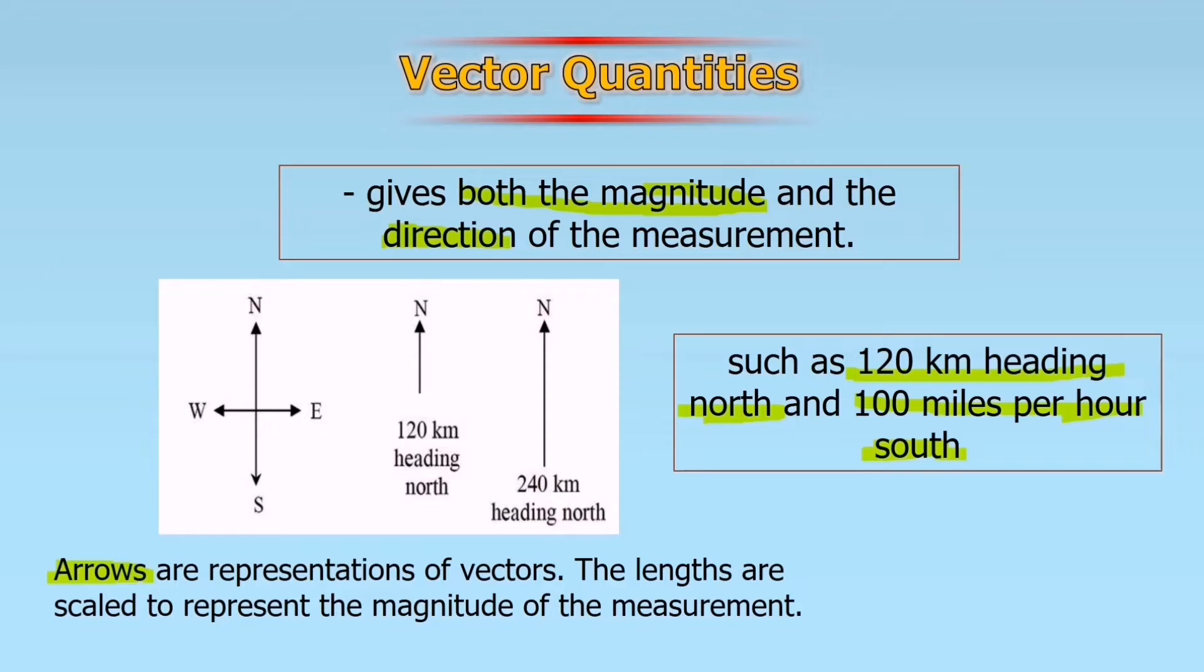In vector quantities, you can identify it as a vector because there is an arrow represented. The arrow represents the direction, where it is heading, either north, east, west, or south. And the length of the arrows represent the magnitude, distance, and displacement.